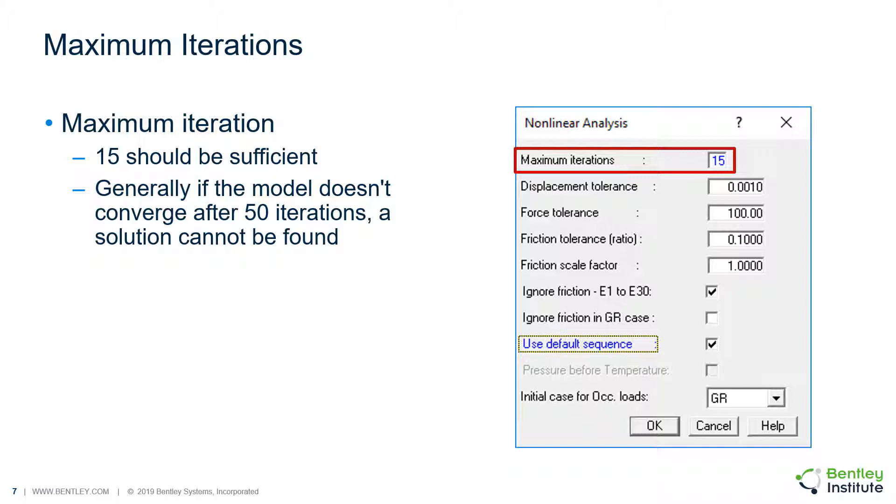Next, each tolerance setting will determine the wiggle room for the convergence. In short, the larger each tolerance value is, the less iterations are required. The trade-off is the potential for inaccurate results. So, the smaller each tolerance value is, the more iterations are required, but the results will converge to a more accurate value.